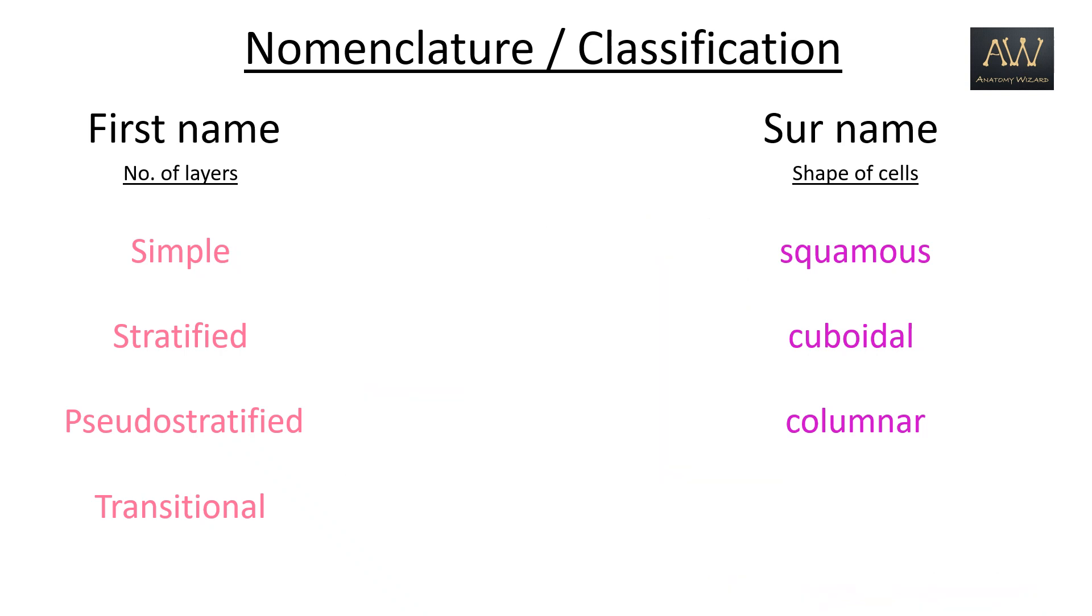Now that we have seen how epithelial tissues are classified by a combination of two names, sometimes a middle or a third name is also added in some special cases. This additional name denotes the various apical surface projections that the epithelial cells may exhibit.